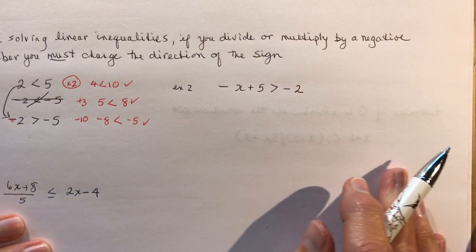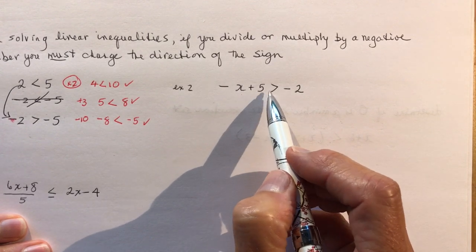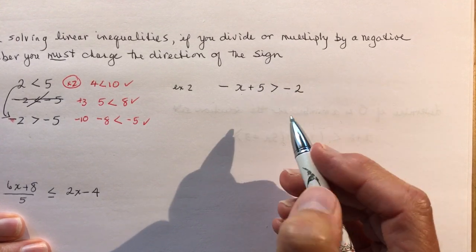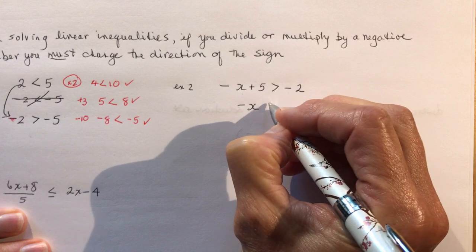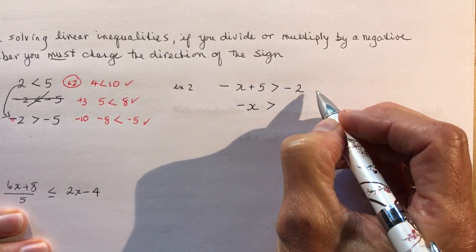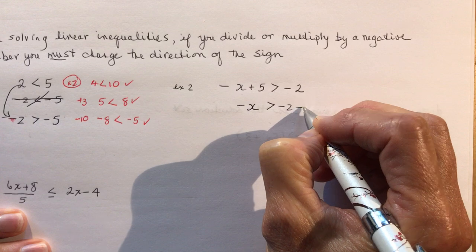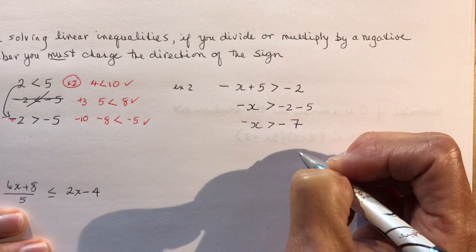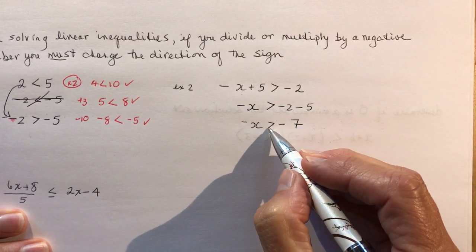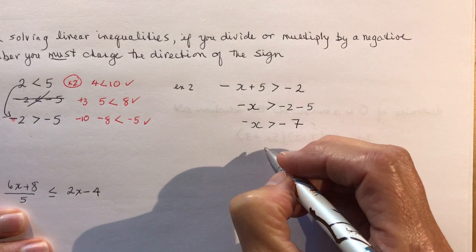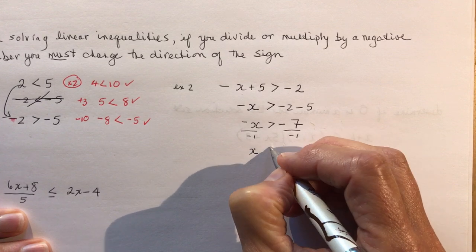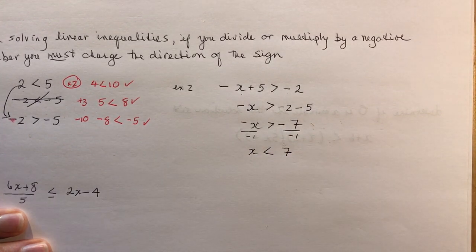Example: negative x plus five is greater than negative two. Just treat the inequality like an equal sign. Subtract five from both sides: negative x is greater than negative seven. Now divide both sides by negative one — since we're dividing by a negative, we must change the sign — so x is less than seven.